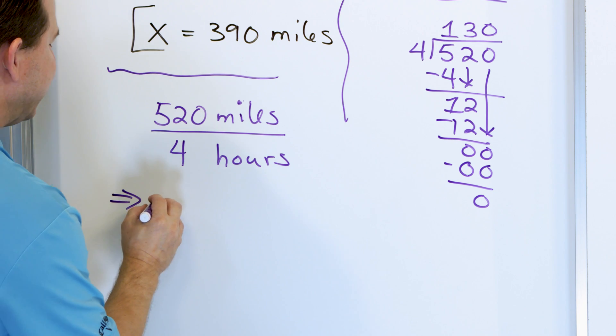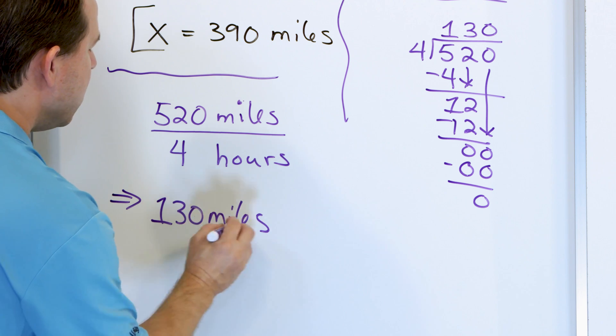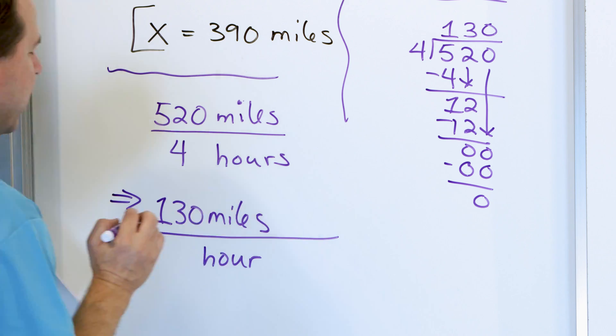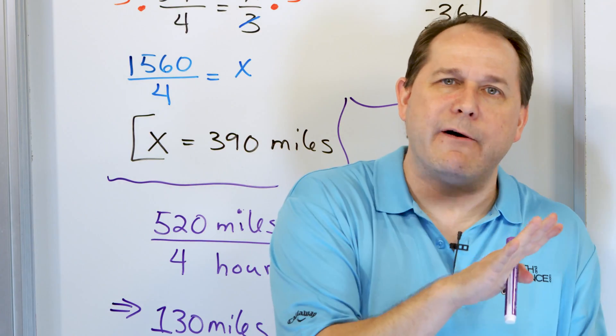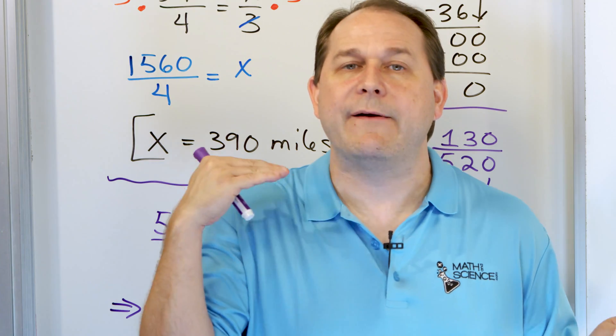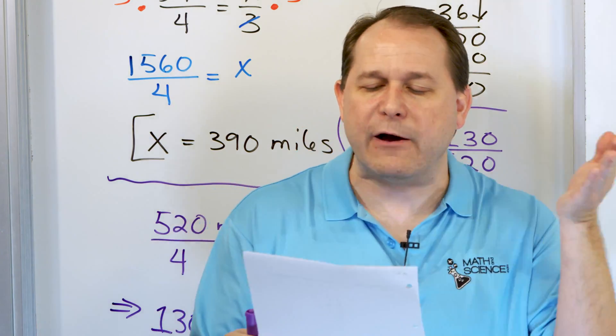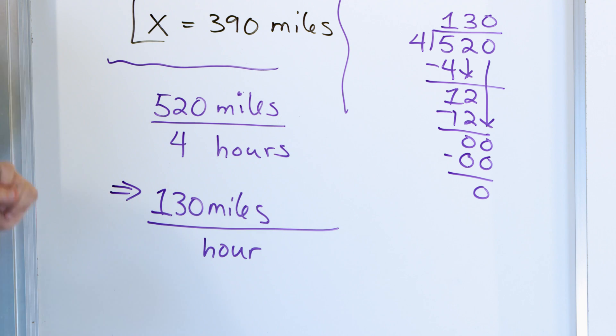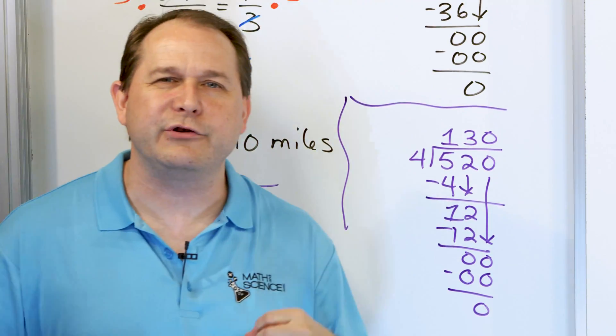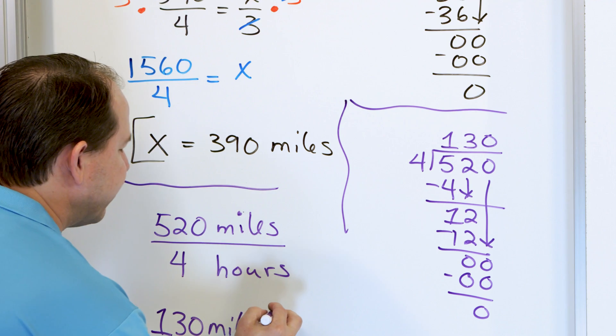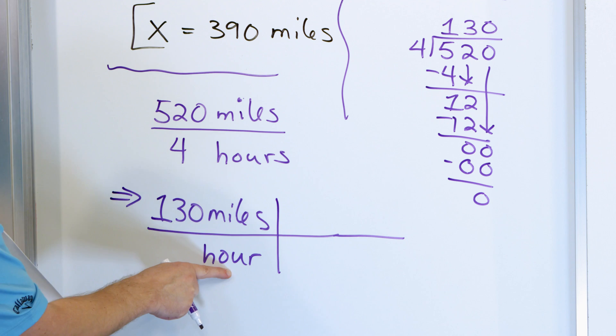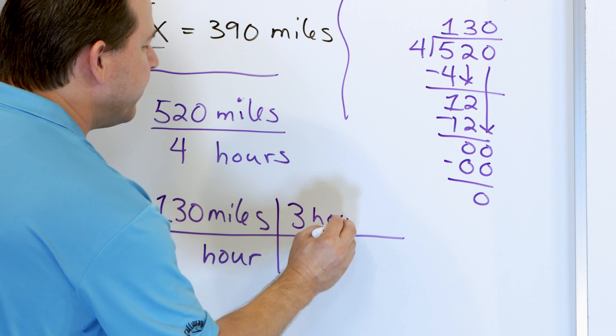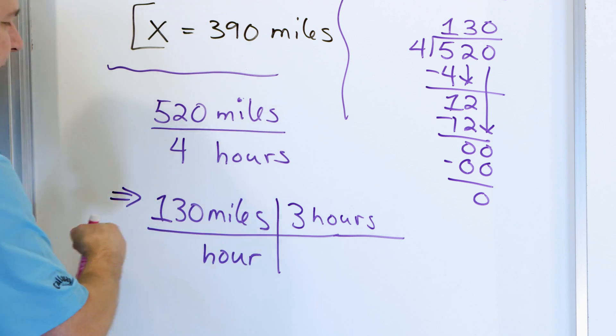So what we have is we know this plane is then traveling 130 miles per hour. Miles per hour. So that's the unit rate. We know how far the plane is going in 4 hours and by dividing, we now have the unit rate. How many miles is happening every hour? The question says, how far does it go in 3 hours? Well, after 1 hour, this plane is going to go 130 miles. After the next hour, it's going to go another 130 miles. And after the third hour, it's going to go another 130 miles.